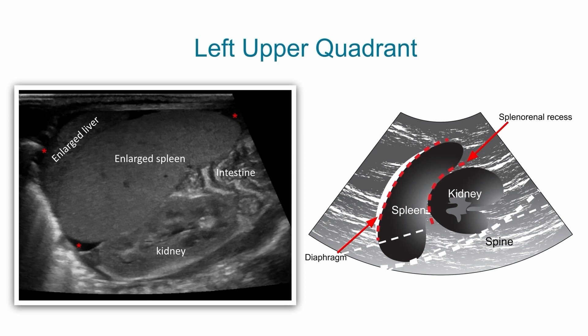The standard left upper quadrant view includes the spleen, the kidney, the diaphragm, and the spine.